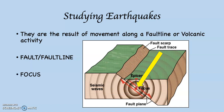When an earthquake happens, there's going to be a place along the fault line where the initial movement occurs. We call that place the focus. This is the place within the Earth where the first movement happens — in other words, this is where the earthquake is generated from. That doesn't mean there aren't other places along the fault plane that break and fracture; it's just that the focus is the initial movement site.